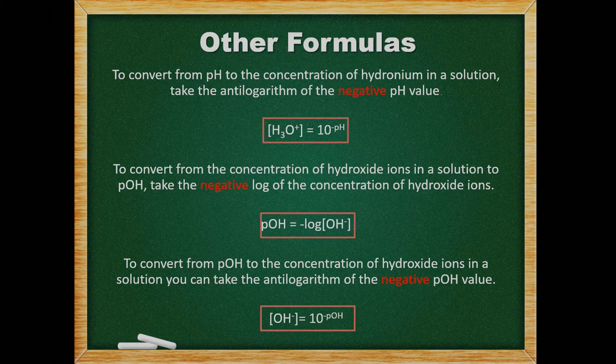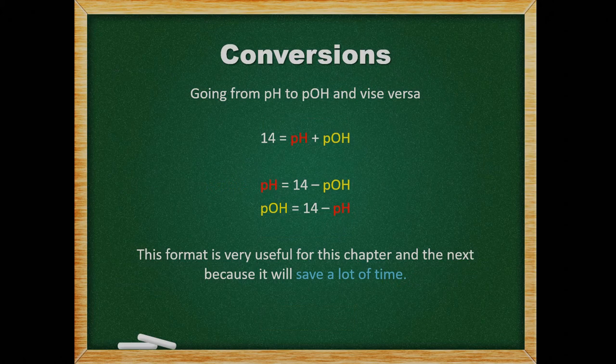To convert from the concentration of hydroxide ions in a solution to pOH, take the negative log of the concentration of hydroxide ions. If we want to convert pOH to the concentration of hydroxide ions, we can take the antilogarithm of the negative pOH value. The sum of pH and pOH equals 14, which is commonly known as the pKw. This means if we want to find the value of pH, we can subtract the pOH from 14.